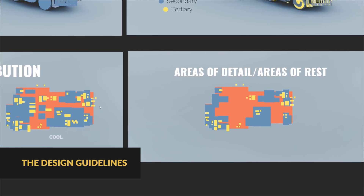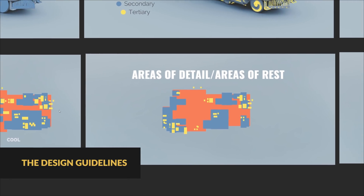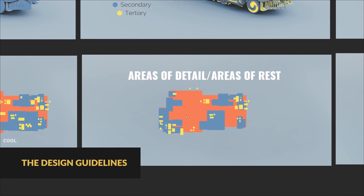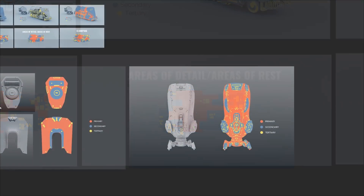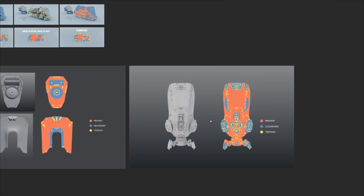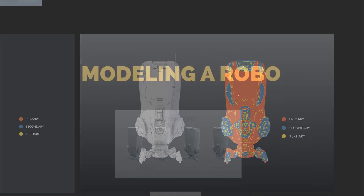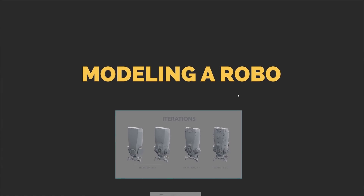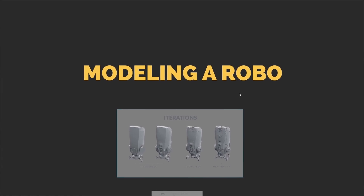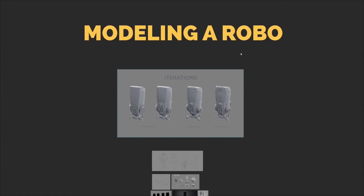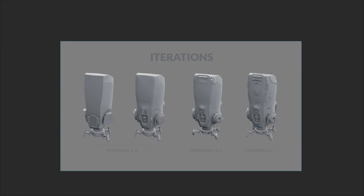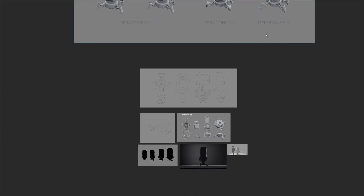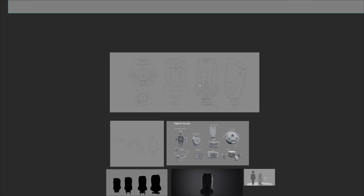To help, there are some principles of design to bear in mind that never let us down: why and where to place detail, the guidelines of shapes, to make it feel like the different parts belong on the same robot. We'll be modeling this guy in an iterative way — blocking out, then refining, then boolean operations, and so on.